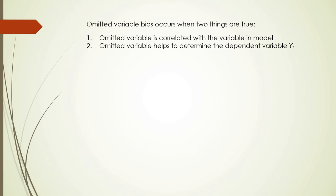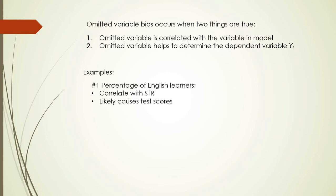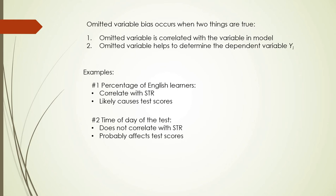There are three examples to show when omitted variable bias applies. First, percentage of English learners: it correlates with student-teacher ratio and likely causes differences in test scores — so yes, this is an omitted variable. Second, time of day of the test: it does not correlate with student-teacher ratio, but it may cause test scores to differ — for example, a test early in the morning may yield lower performance.